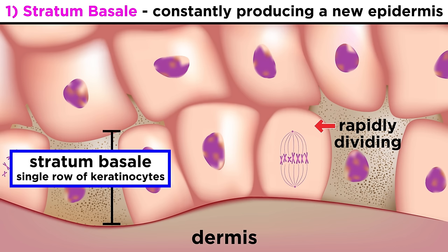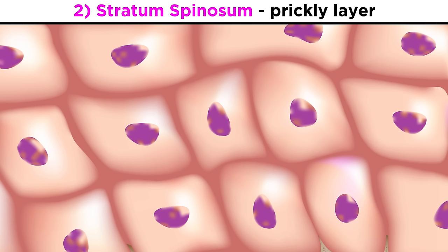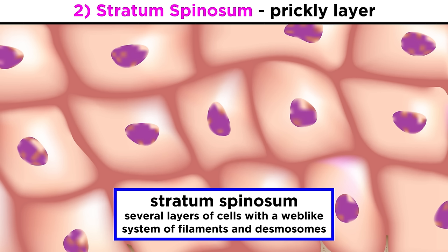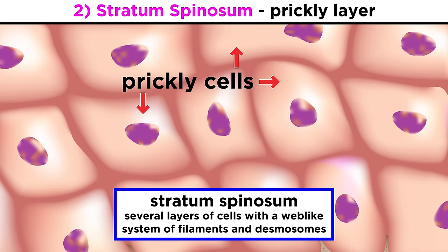This layer also contains melanocytes, which produce melanin, and tactile cells, which act as the sensory receptor for touch. Above this is the stratum spinosum, meaning prickly layer. This section is several layers of cells thick, and is full of cells with a web-like system of intermediate filaments attached to desmosomes. They look kind of spiky, so they are sometimes called prickly cells.